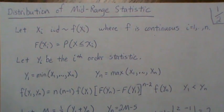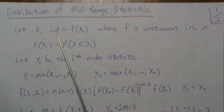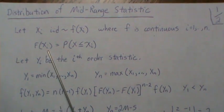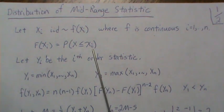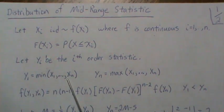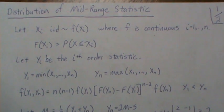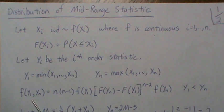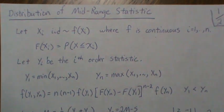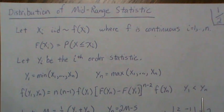In this video we derive the distribution of the mid-range statistic. Let X be IID — independent identically distributed — with some density where F is continuous, i goes from 1 to N. The CDF, capital F of X, is the probability that X is less than x. Let Y_i be the i-th order statistic, so Y_1 is the minimum and Y_N is the maximum. The joint density for Y_1 and Y_N is a known result covered in other videos on order statistics.